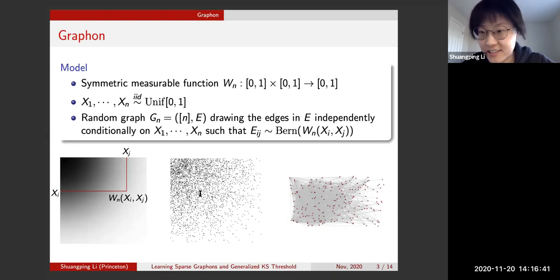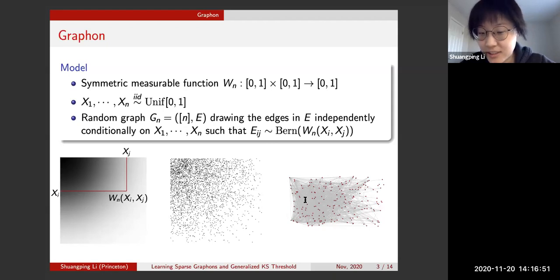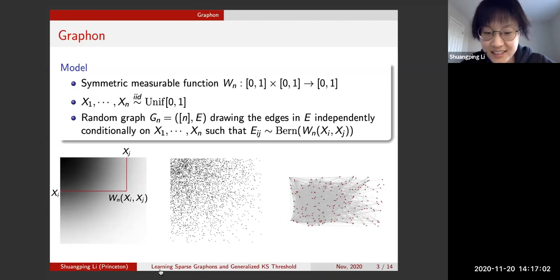For example, this adjacency matrix is generated from the graphon — a black dot indicates an edge, a white dot indicates no edge. Vertices from the darker region are more likely to connect to each other, while vertices from the lighter region are more sparse.